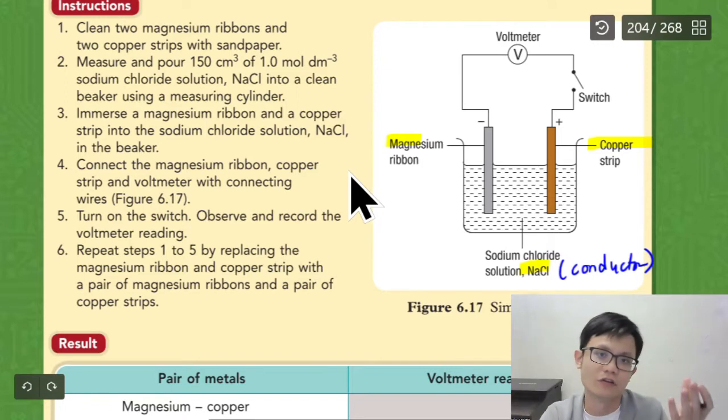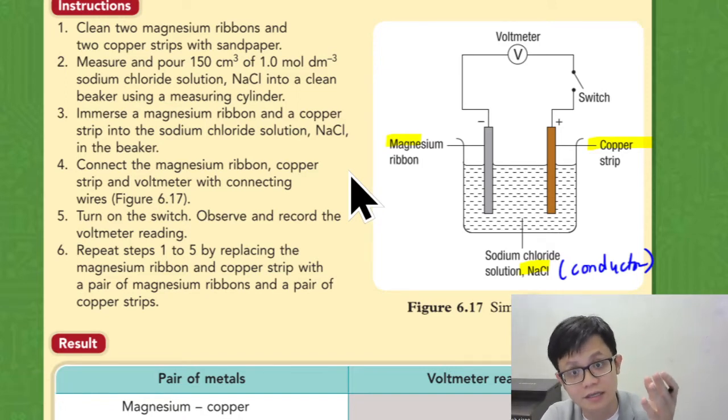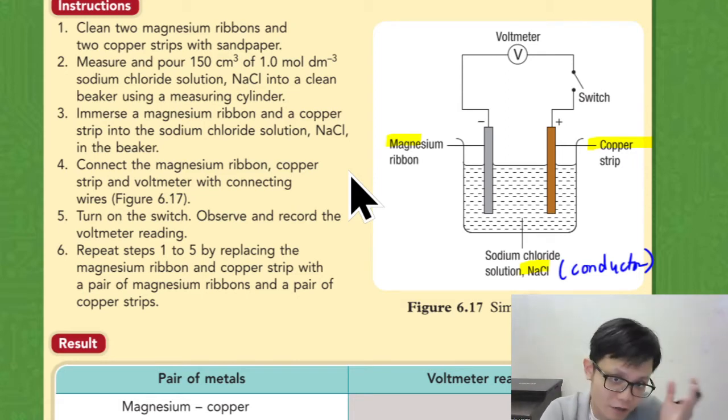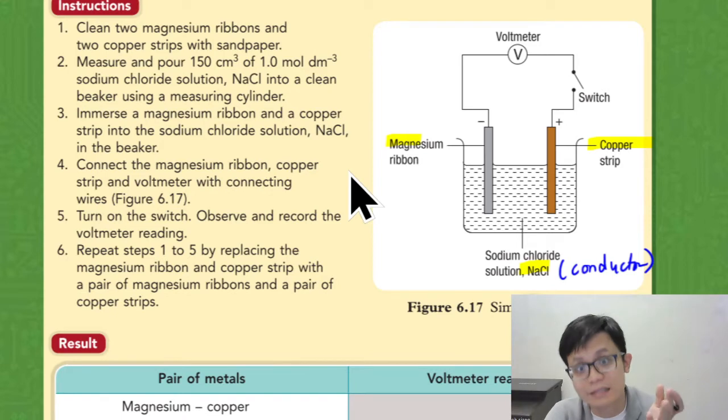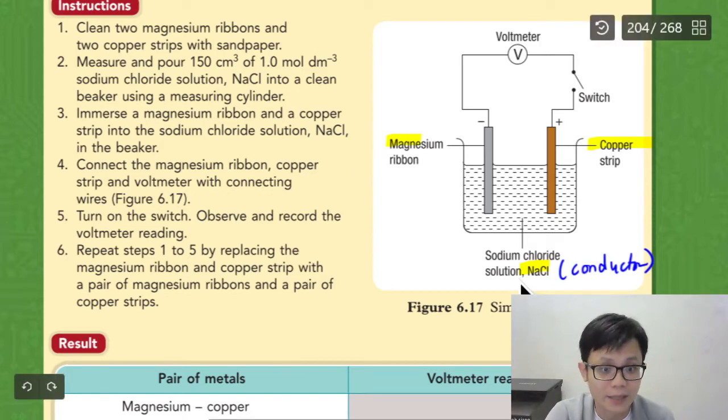And of course, water also is the electric conductor. It might not be that strong, but it is still the conductor. And to make it better, you use sodium chloride. Put a salt. Sodium chloride, put a salt. And it makes a better electric conductor.